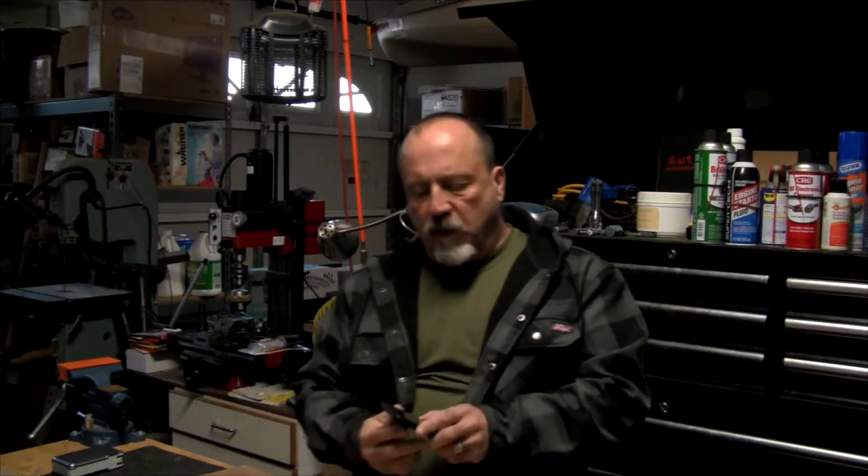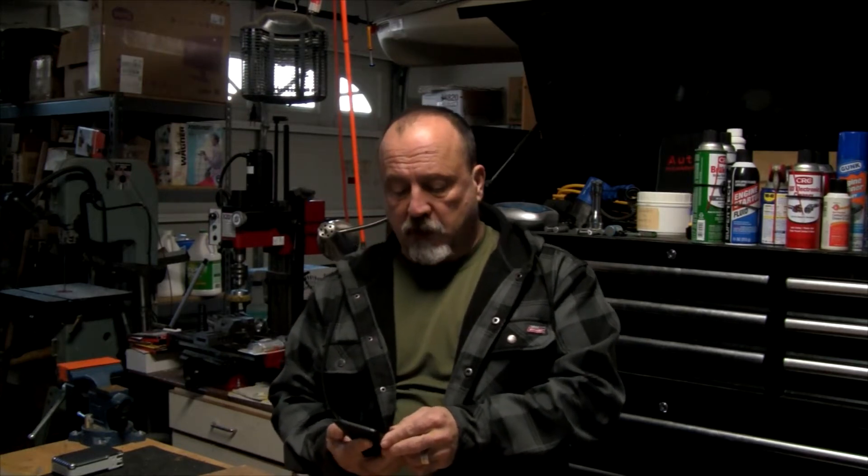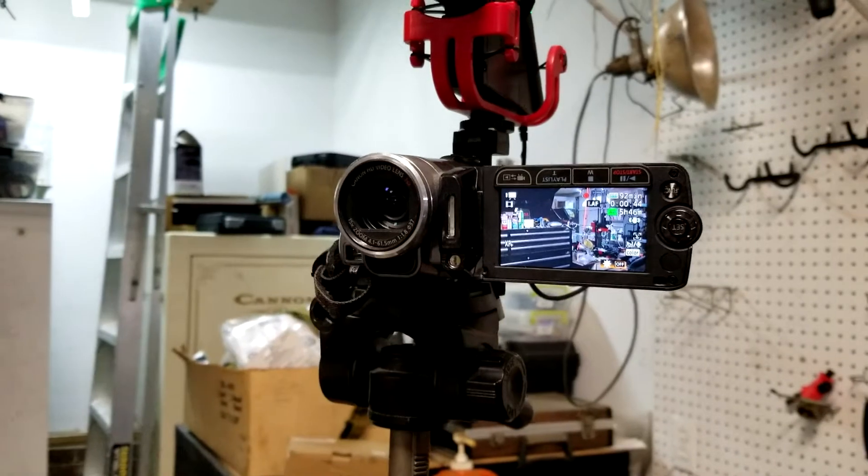All right, so today I'm going to go over how to make an external battery for your camcorder. I use a Canon Vixia HF200, it's a great beginner camera if you're just starting out on YouTube. There's a lot of neat things about it that you would want as features.